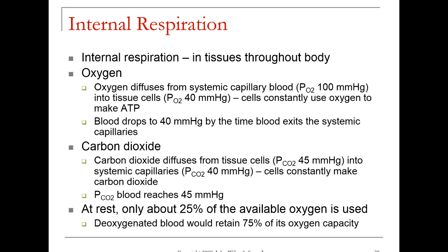Your cells use oxygen in the process of aerobic cellular respiration to make most of the cell's ATP. As the cells use up that oxygen, the partial pressure of oxygen drops right around the cells, creating a low oxygen environment. The oxygen can then move from higher partial pressure in the systemic capillaries into the interstitial fluid and then into the tissue cells. By the time blood moves through a capillary bed, it typically drops from 100 millimeters of mercury at the beginning to 40 millimeters of mercury of oxygen when it exits the capillary bed.